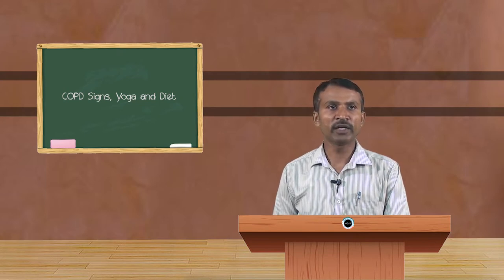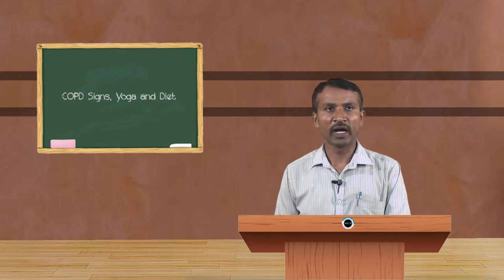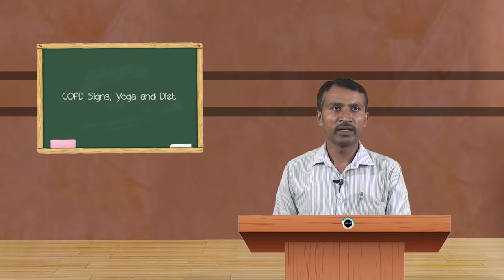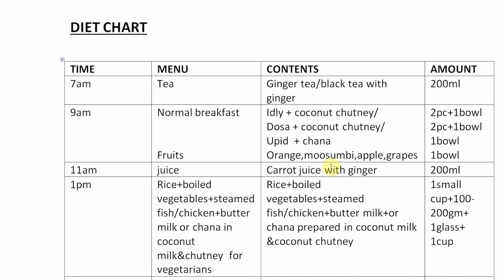Practice yogic kriyas, mainly sutraneti and jalaneti, to desensitize the body. The important diet chart for COPD is divided into four main columns: time, menu, contents, and amount. At 7 a.m., have a glass of ginger tea or black tea with ginger, not exceeding 150 to 180 ml.